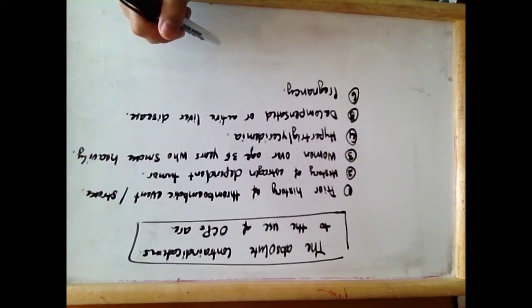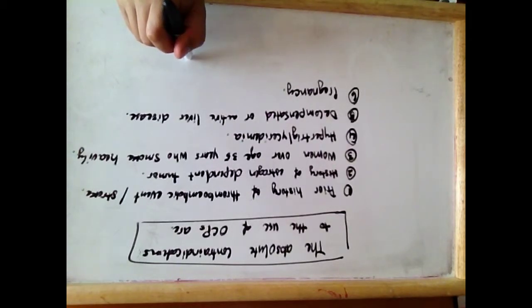Additionally, progesterone may enhance contraceptive efficacy by making the endometrium less suitable for implantation and decreasing the permeability of cervical mucus to sperm.